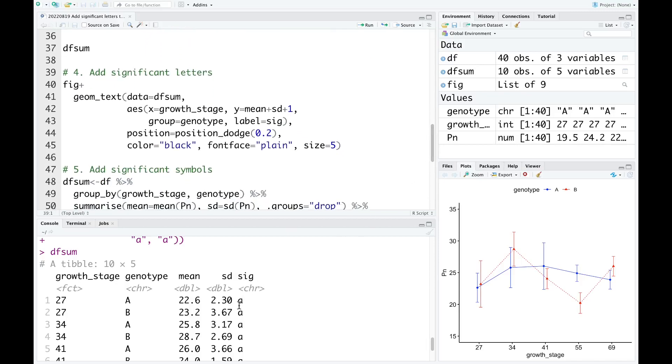When we have this, we can add the significant letters to the line graph. We use geom_text and the data we use is df-sum that we just created above. And we use aesthetic. The x-axis is growth stage. The y-axis is mean plus standard deviation plus one. The group is genotype. Label is significant. And we also need to use the position dodge. And in this case, I use the color is black, font face plain, and size is 5.